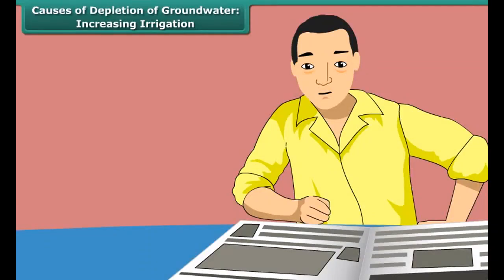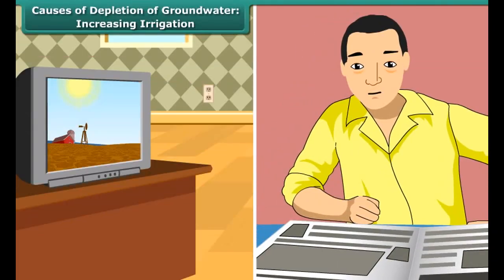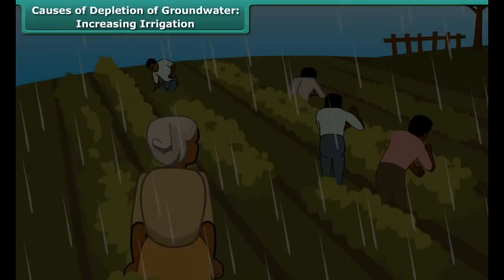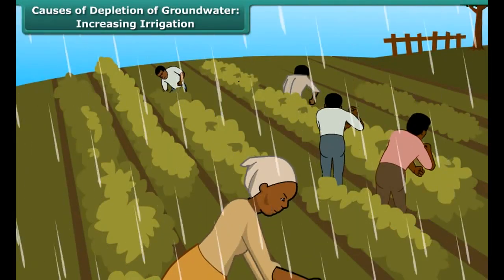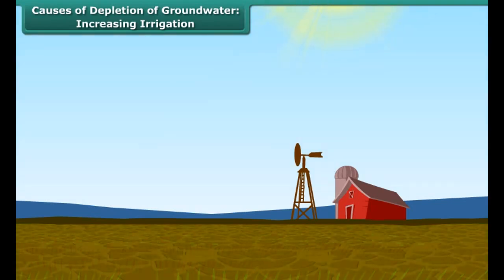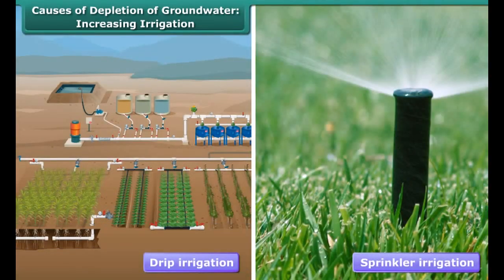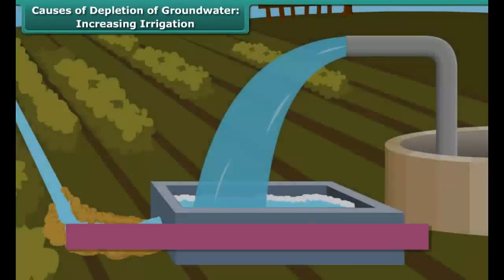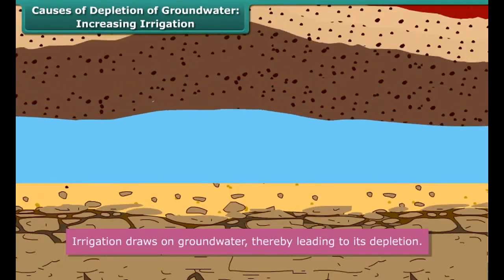A large number of farmers in India depend on rains to water their fields. Crops fail when rainfall is scanty. Hence, there is a greater emphasis on irrigation. Irrigation systems like drip irrigation and sprinkler irrigation are promoted to ensure regular water supply to crops, whether there is rain or not. Irrigation draws on ground water, thereby leading to its depletion.